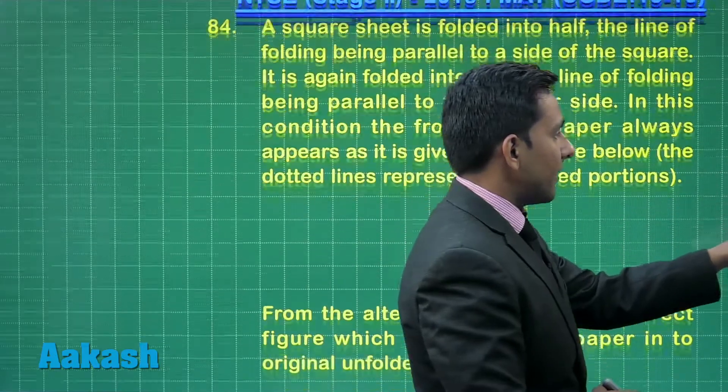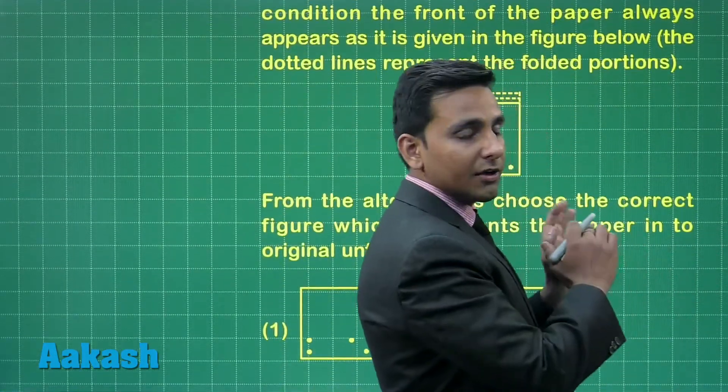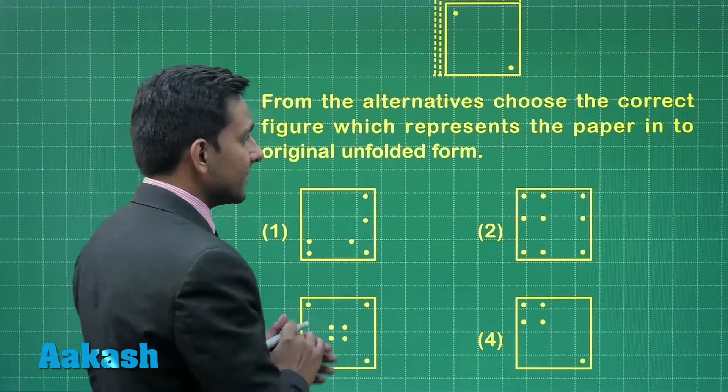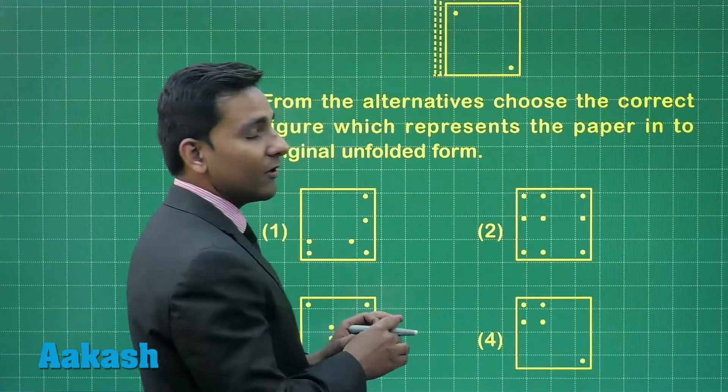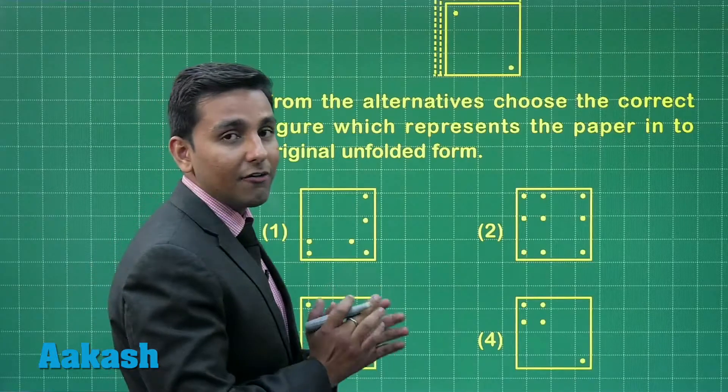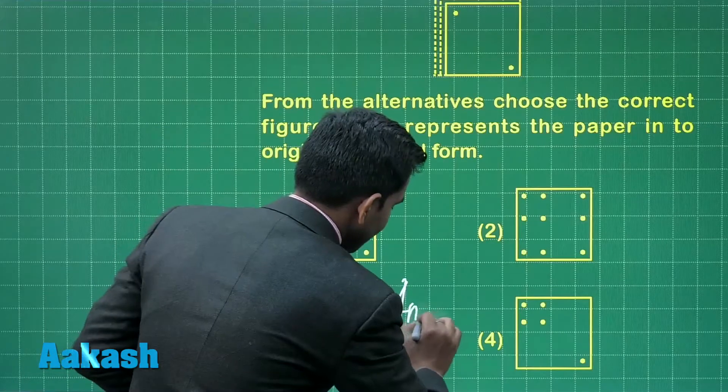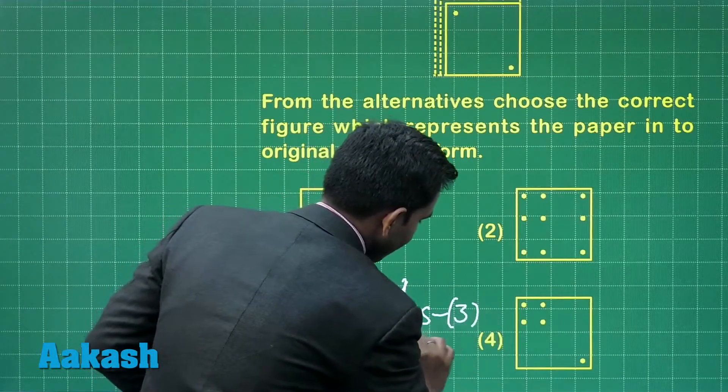When we unfold after applying the given changes we will get the figure in option number 3 is the correct figure which obtained when we unfold the given paper after applying the given changes. So here the third option is the correct answer, that means the answer for this question is option number 3.